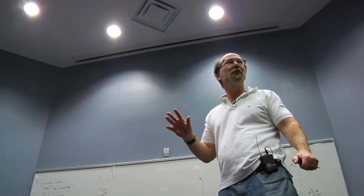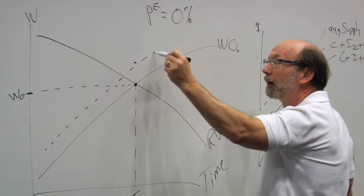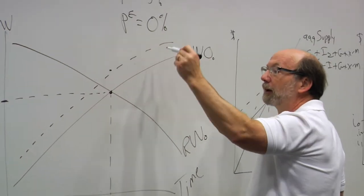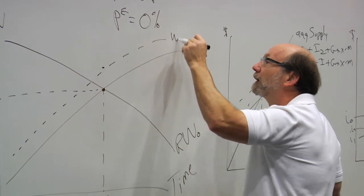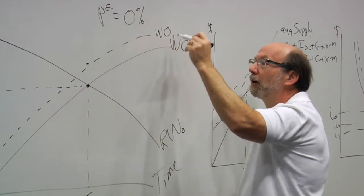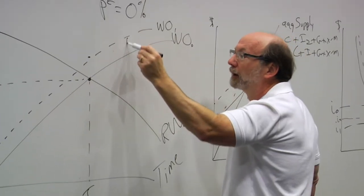If the tax rate's 100%, no one's going to work and there's going to be no revenue. What we're doing in this particular class, we're trying to explain inflation and unemployment.